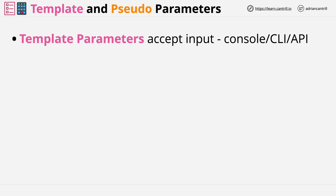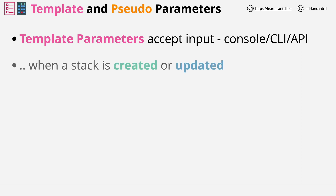They let external sources provide input into CloudFormation. For template parameters, this means that a human or automated process can provide input via the console, CLI, or API when a stack is created or updated. An example of this might be the size of the instance or the environment that the template is for, such as dev, test, or prod.